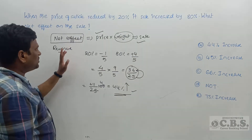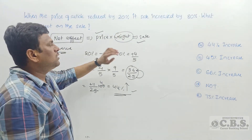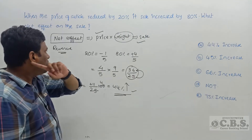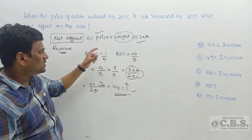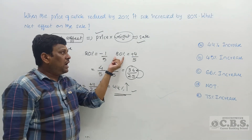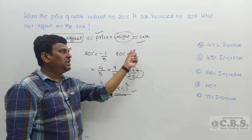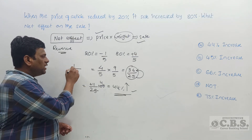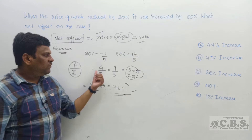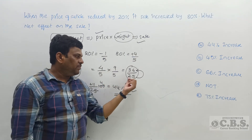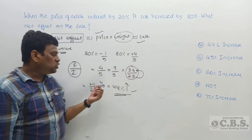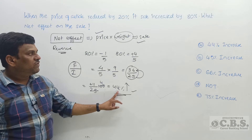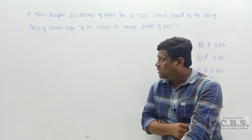Net effect means revenue = price × sales. Price decreased by 20% (1 by 5 decrease), so price goes from 5 to 4. Sale increased by 30% (3 by 10 increase), so sales go from 10 to 13. Initial revenue: 5 × 10 = 50. Final revenue: 4 × 13 = 52. Increase is 2 parts out of 50, so percentage increase = 2/50 × 100 = 4 percent increase.